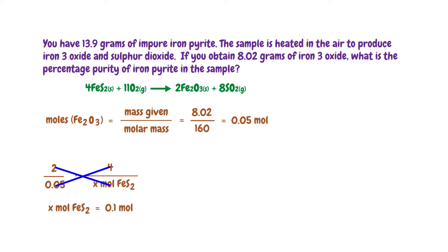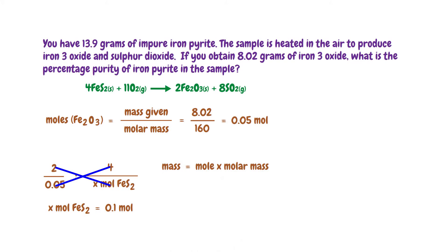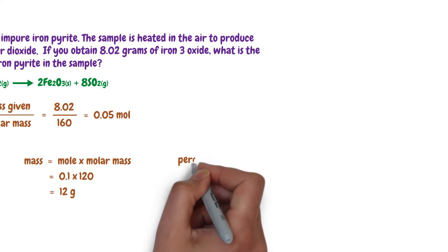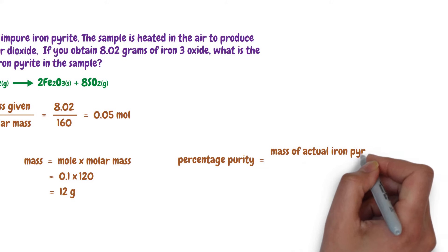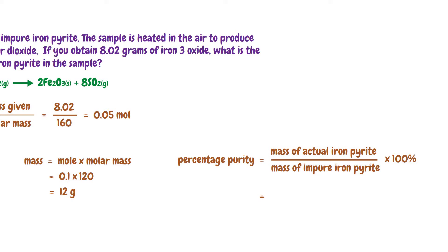Now we can find the mass of iron pyrite that reacted with oxygen. Mass equals moles times molar mass. The moles of iron pyrite is 0.1 and the molar mass of iron pyrite is 120. 0.1 times 120 gives 12 grams. Percentage purity equals the mass of actual iron pyrite over the mass of impure iron pyrite, times 100%. That is 12 over 13.9, times 100%, which gives 86.3%. Therefore, the percentage purity of the iron pyrite is 86.3%.